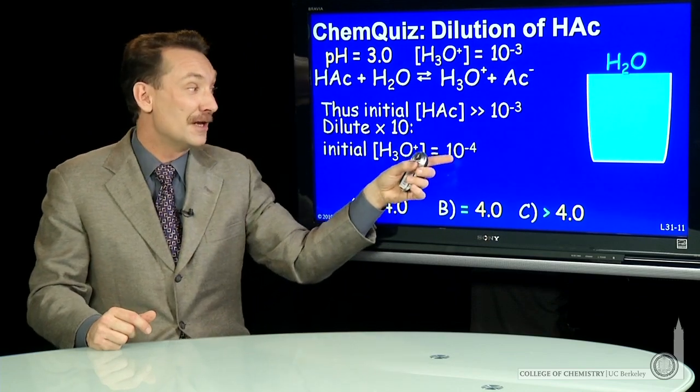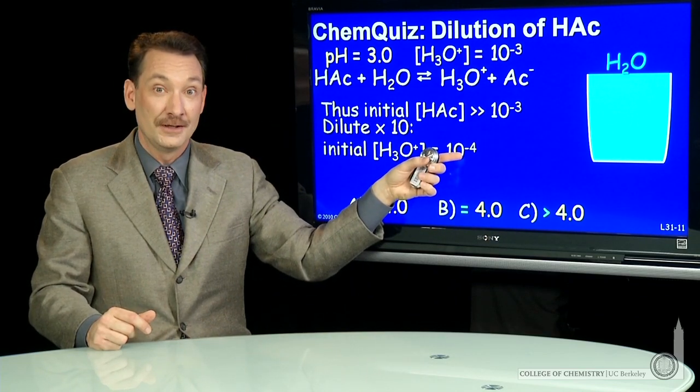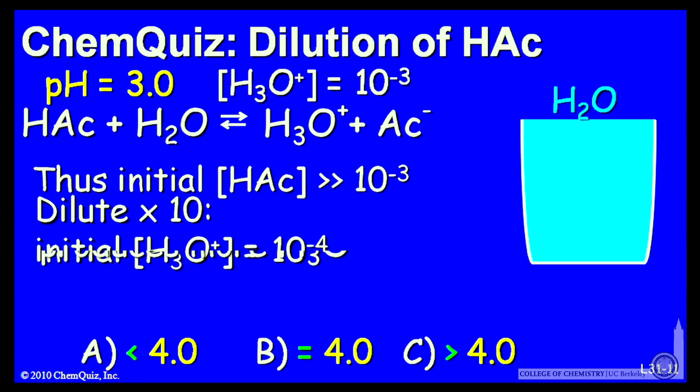So after the dilution, immediately after the dilution, pH goes to 4. But then more H3O+ is produced by this equilibrium.